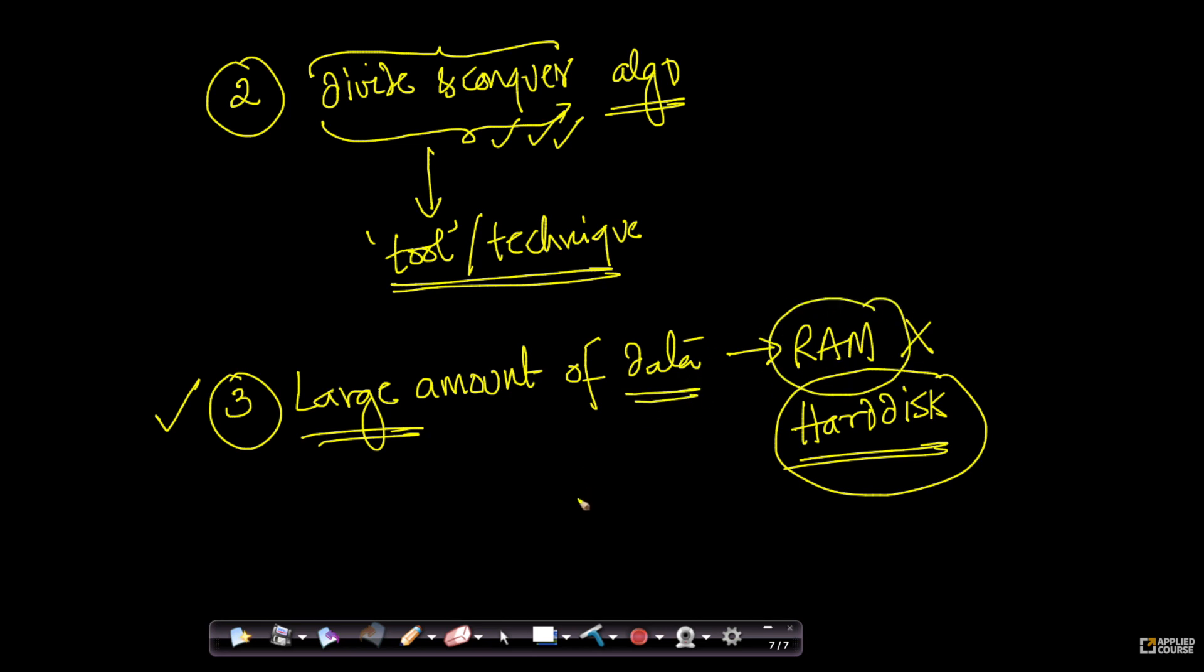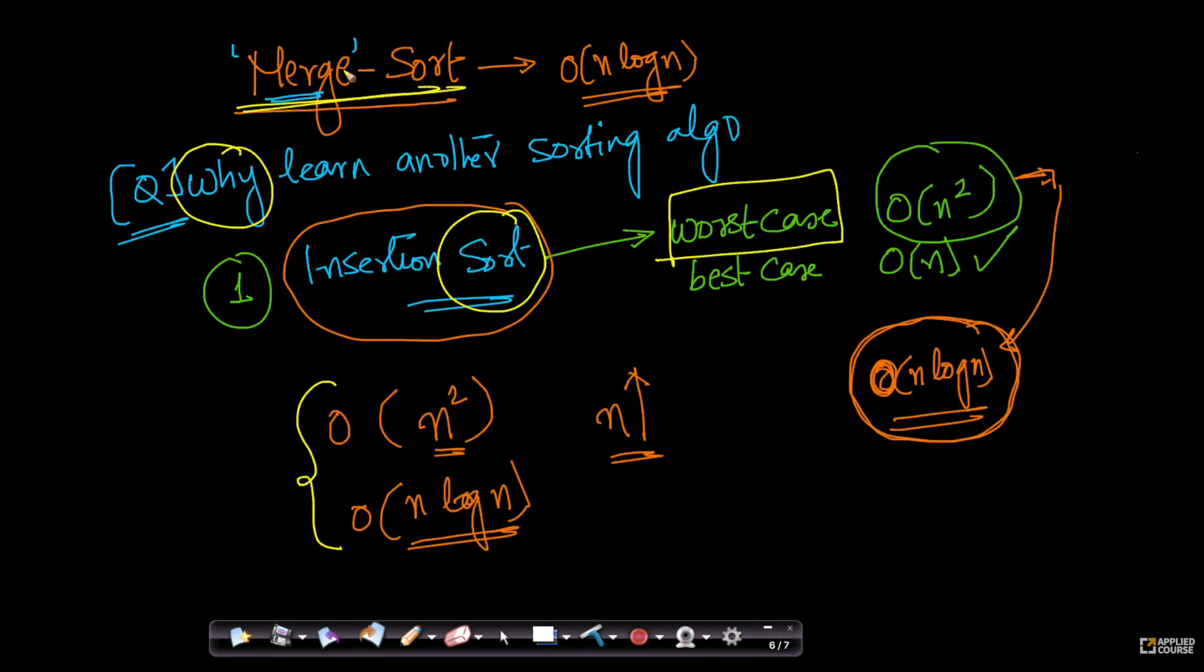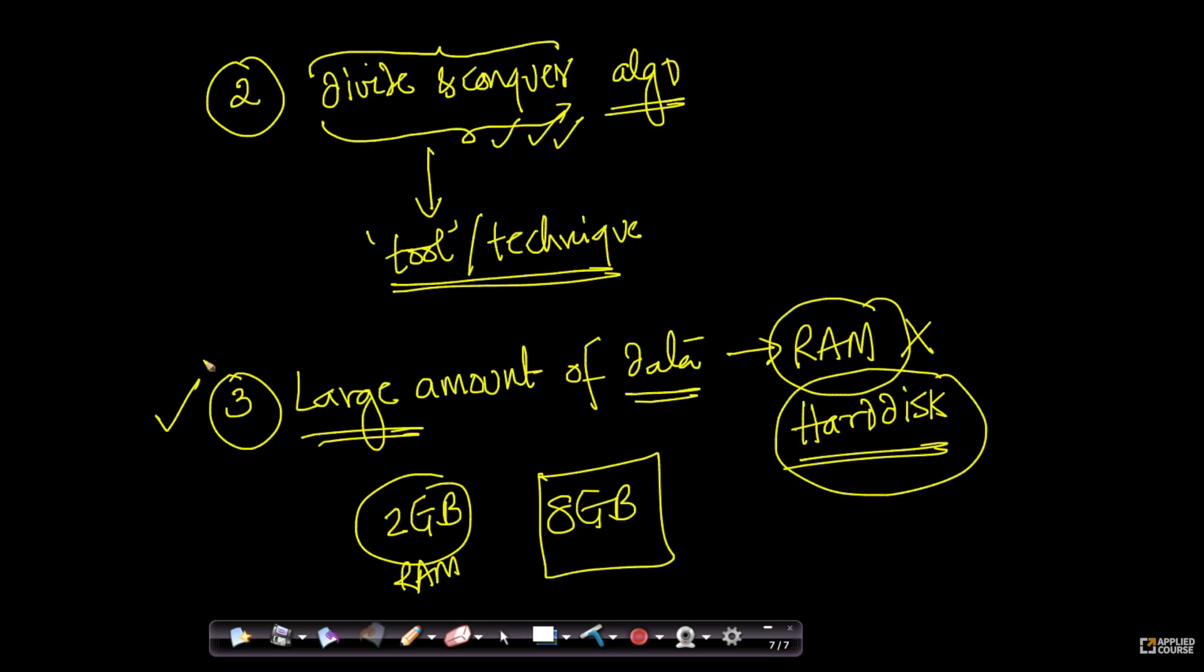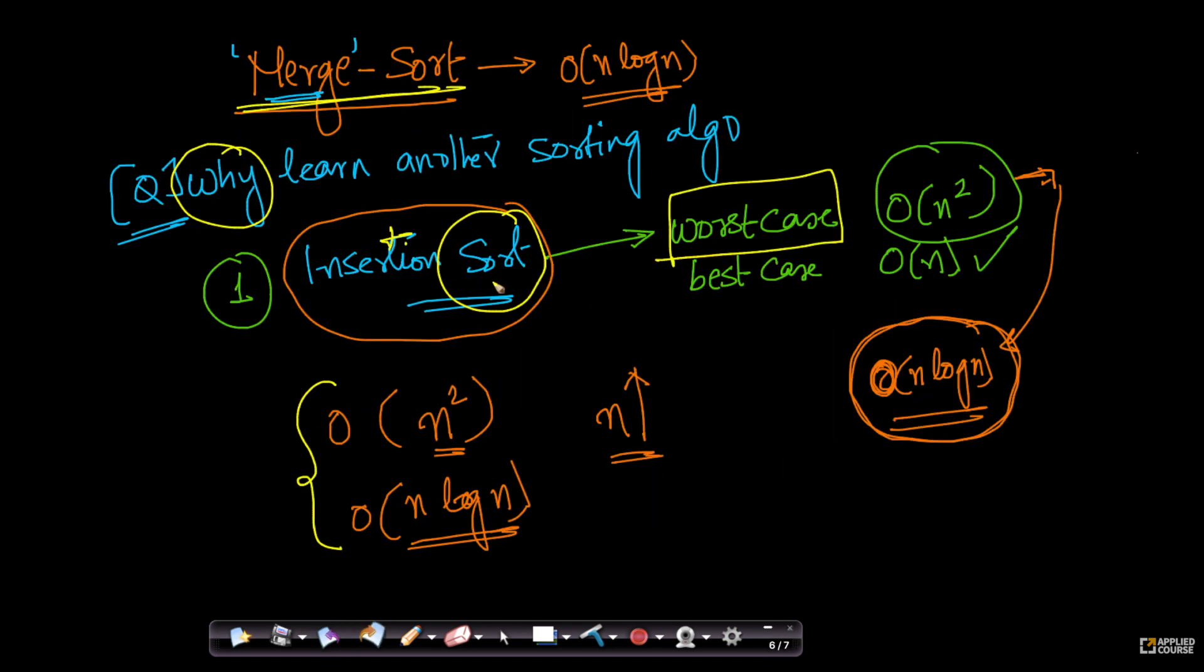Imagine if I have an array which is 8GB in size, but I have only 2GB RAM. How do I now sort this 8GB of data? That can be done using merge sort. It's much harder and more complex to do it using insertion sort or other sorting algorithms. Here I'm just giving an overview of why we study merge sort, but we'll go through each of these three reasons step by step as we progress through this chapter.